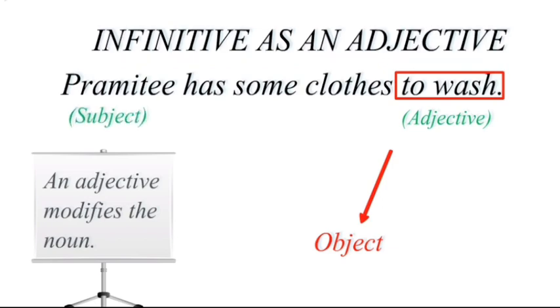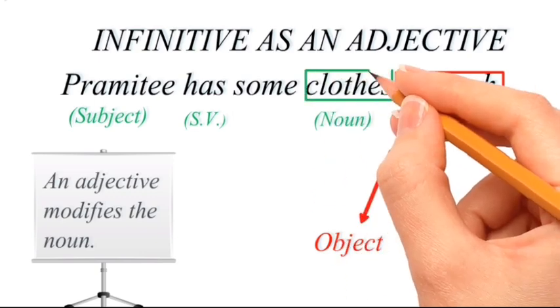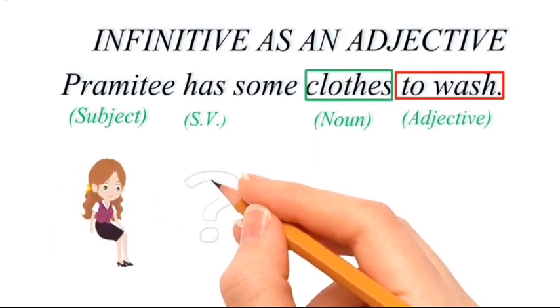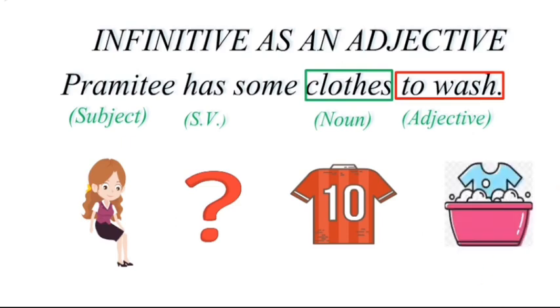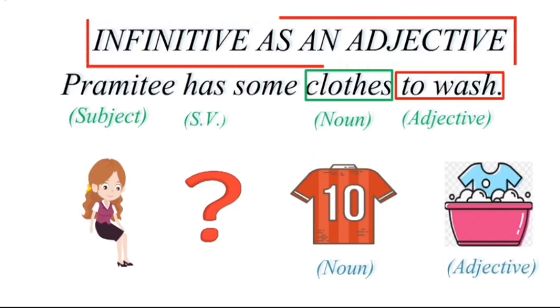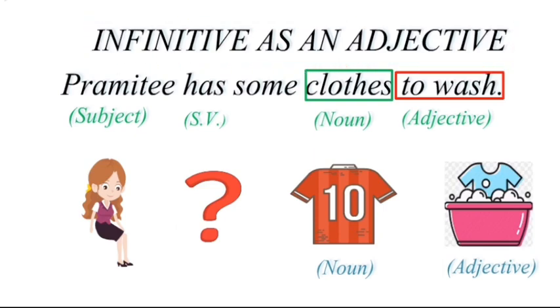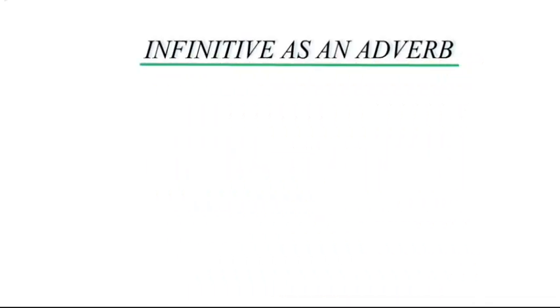In 'Preetie has some clothes to wash,' 'Preetie' is the subject, 'has' is the supporting verb, 'clothes' is the noun, and 'to wash' is an adjective modifying the noun 'clothes.' Put differently, what does Preetie have? Some clothes which are to be washed — so the quality of the clothes is that they are to be washed. Hence the infinitive works as an adjective.